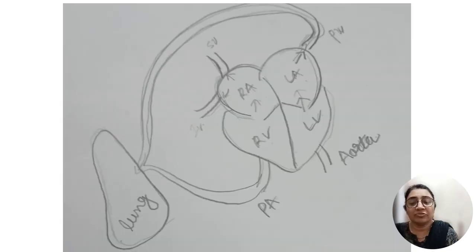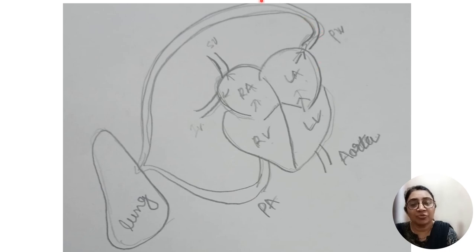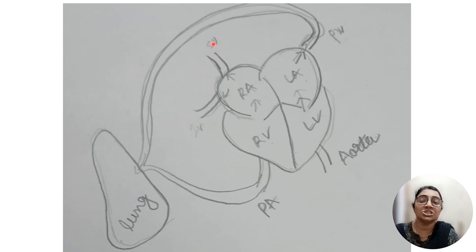Whenever left ventricular failure occurs, it affects the right ventricle as well. When the left ventricle is not able to pump out blood, remaining blood gives back pressure to the left atrium and pulmonary vein, increasing pressure in pulmonary veins and capillaries, causing pulmonary congestion and edema. Further, blood from the right ventricle will not be accepted by the lung. So back pressure occurs in the right ventricle and right atrium, transferring to the superior and inferior vena cava, causing congestion of peripheral organs and peripheral edema.